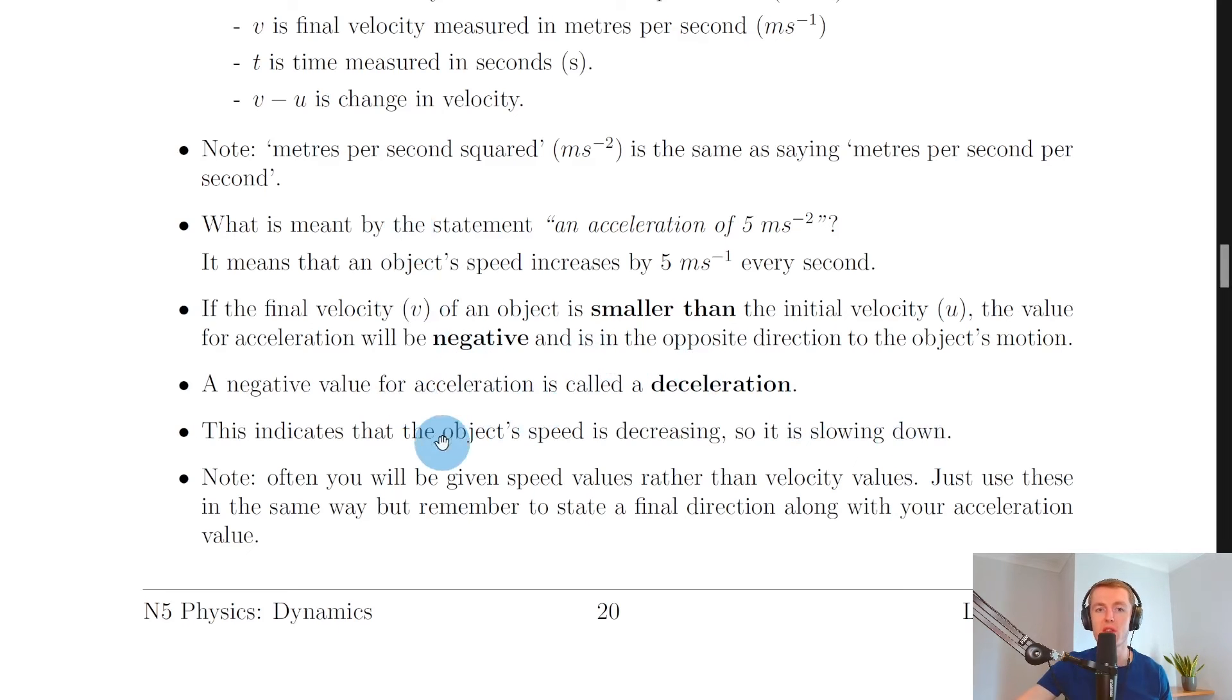Jumping back to the notes now there's just a few things to finish looking at. So it says if the final velocity v of an object is smaller than the initial velocity u, the value for acceleration will be negative and is in the opposite direction to the object's motion. We therefore say that a negative value for acceleration is called a deceleration. This indicates that the object's speed is decreasing so it is slowing down.